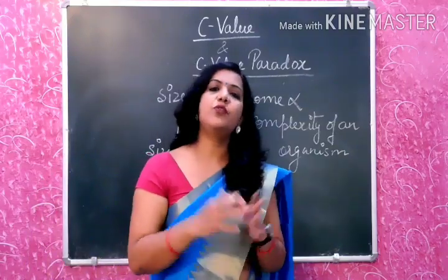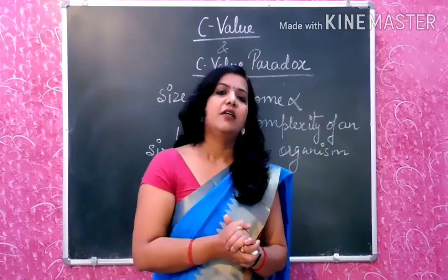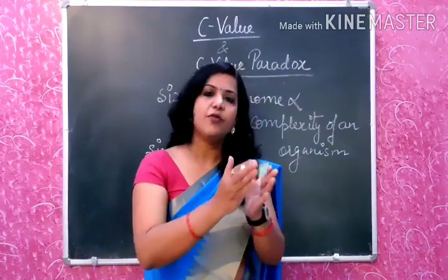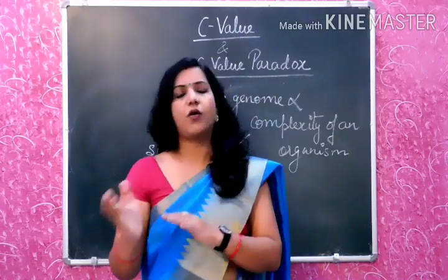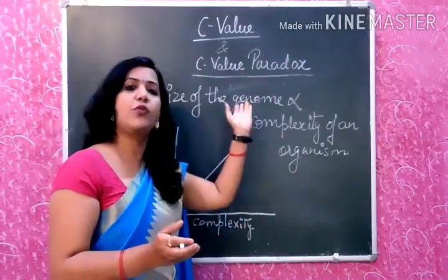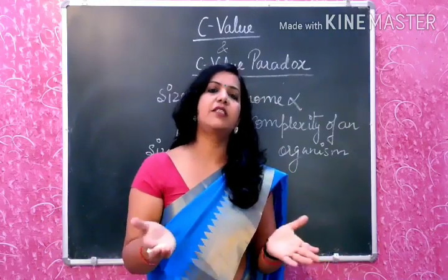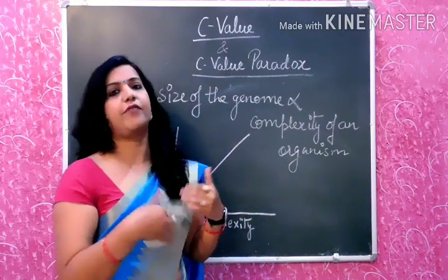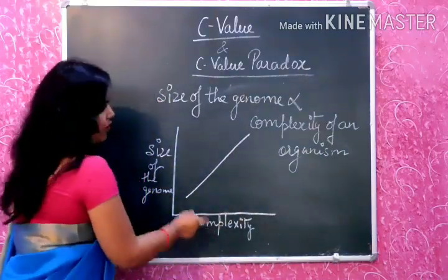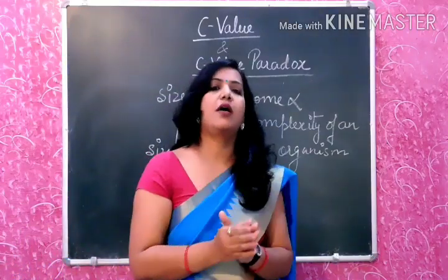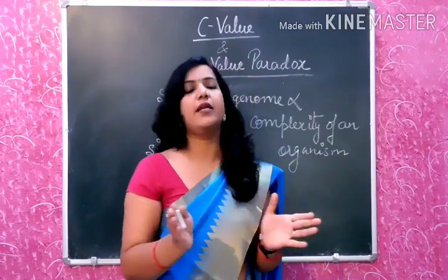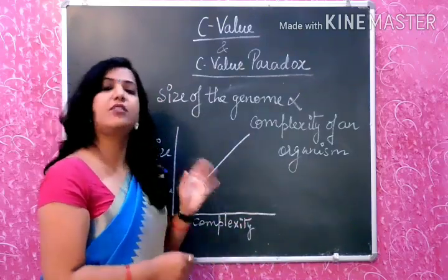But this concept was found to be completely wrong in later studies. In the 1970s, a new term came: C-value paradox. Paradox means opposite — while C-value defines that genome size increases with complexity, paradox means the opposite: genome size does not reflect the complexity of an organism. There is a very large disparity between the complexity of an organism and size of the genome. C-value paradox defines that there is no direct relationship between complexity of an organism and the size of the genome.